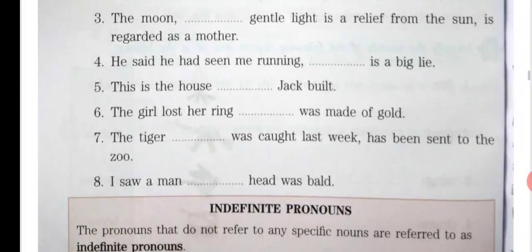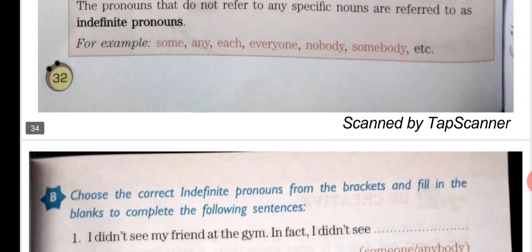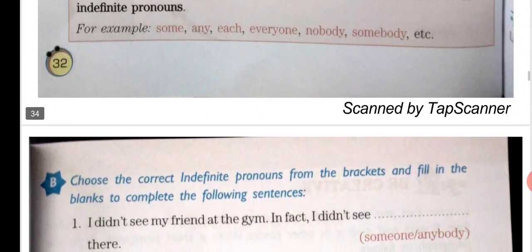Now we will move to indefinite pronouns. Indefinite pronouns kya hote hain — kuch aise pronouns hain jo kisi specific noun ko refer nahi karte. They are called indefinite pronouns. Examples include: some, any, each, everyone, nobody, somebody.